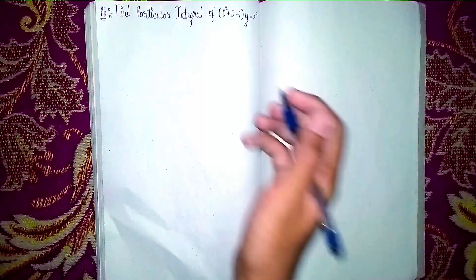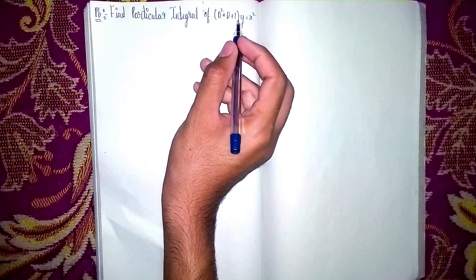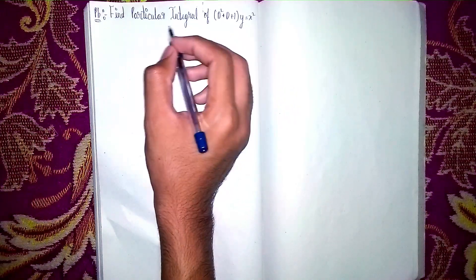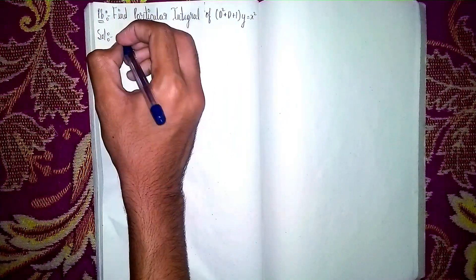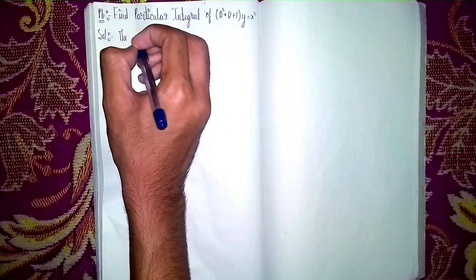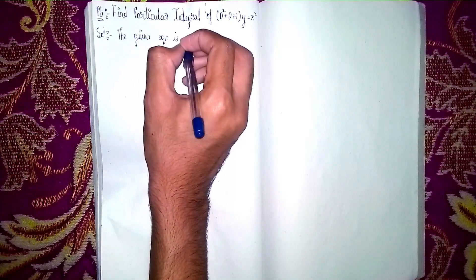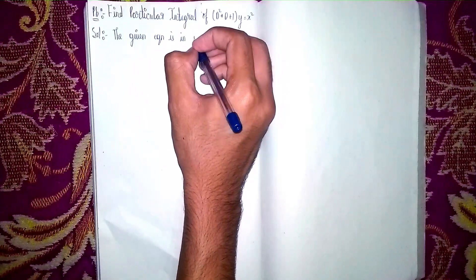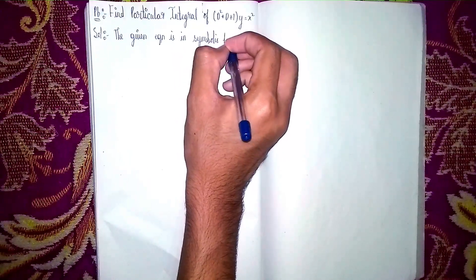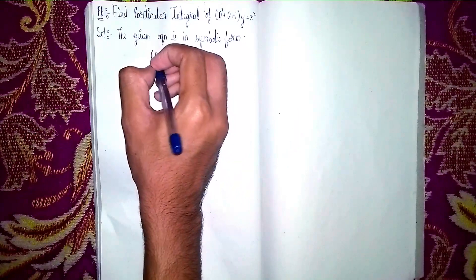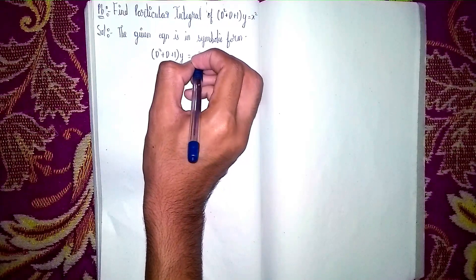Hello everyone, welcome back to my channel. Today's question: find the particular integral of (D² + D + 1)y = x². This is a non-homogeneous linear differential equation. First, we note that the given equation is in symbolic form. The equation is D² + D + 1 divided into y equals x².